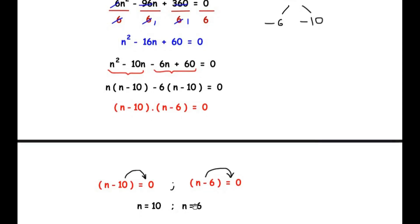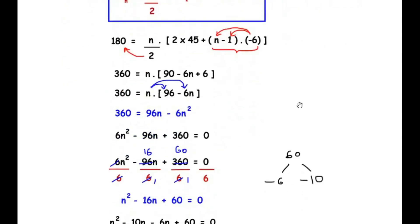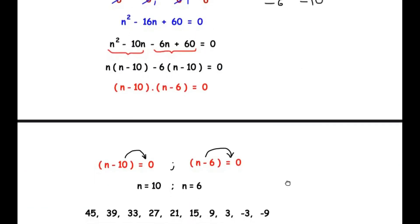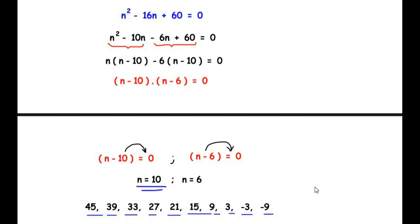As we can see, we have got double values for n — n can be either 6 terms or 10 terms. Now what does this mean? The question asks us to explain the double answer. Let us write down all the terms of the sequence: starting at 45, then 39, then 33 as given, and subtracting 6 each time since the common difference is −6: 33, 27, 21, and so on. Taking 10 terms — 1 through 10 — and adding them gives 180, confirming n = 10.